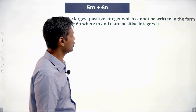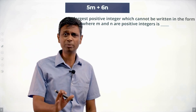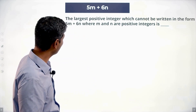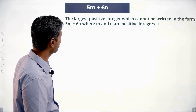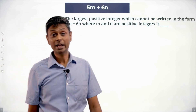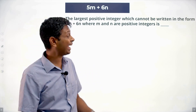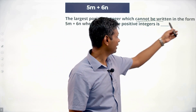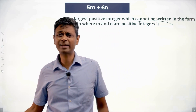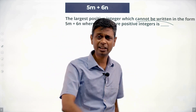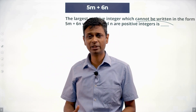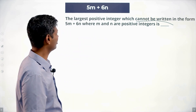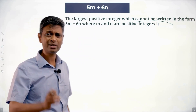Find the largest positive integer which cannot be written in the form 5m plus 6n where m and n are positive integers. Anytime I see 'cannot be written,' I want to think about what CAN be written. So I'll think about what can be written in the form 5m plus 6n.